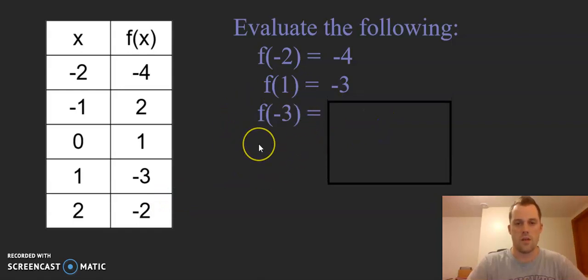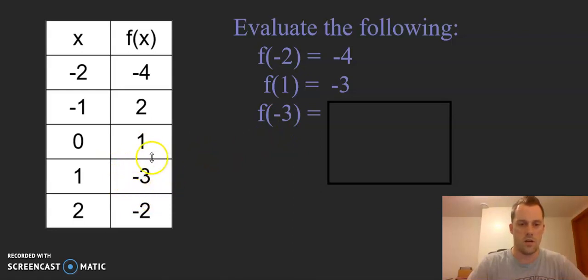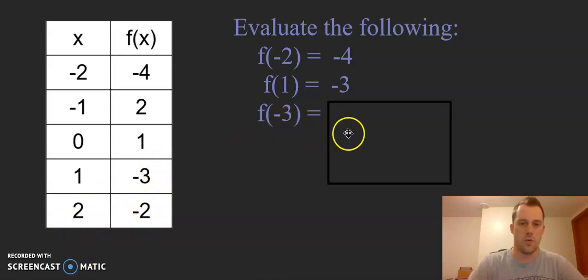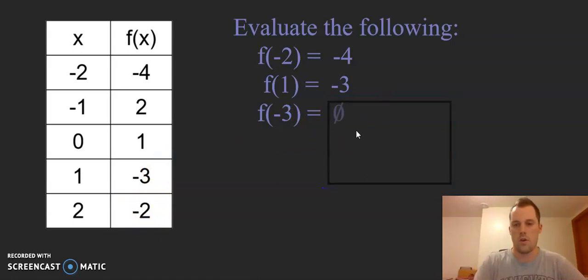And then for f of negative 3, we see negative 3 here in our output column, but there's no negative 3 listed in our input column. And so if that's the case, if we don't see that value listed, then there is no output for that specific input, and we end up with no solution.